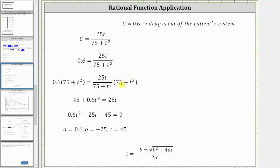On the left, we distribute, getting 45 plus 0.6T squared. Notice how we have a quadratic equation. So we set the equation equal to 0 by subtracting 25T on both sides, and we're arranging the terms in descending order, which gives us 0.6T squared minus 25T plus 45 equals zero.